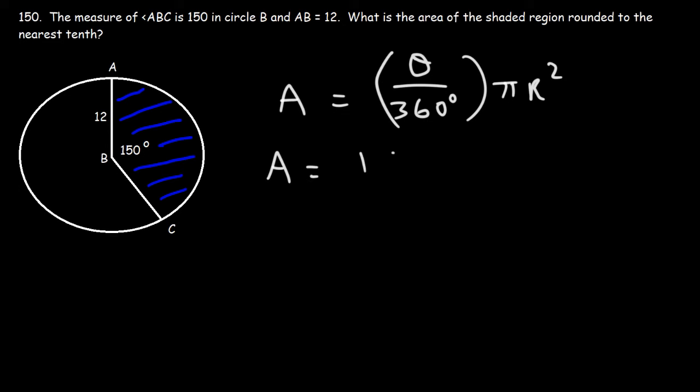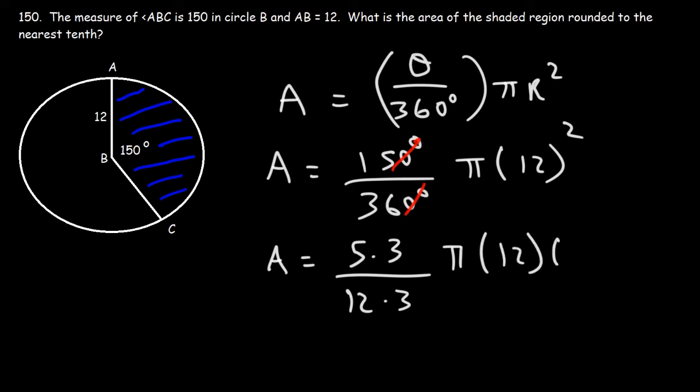So theta is 150 and r, the radius of the circle, is 12. So let's begin by canceling a zero. So we have 15 over 36. I'm going to write 15 as 5 times 3, 36 as 12 times 3, and 12 squared as 12 times 12.